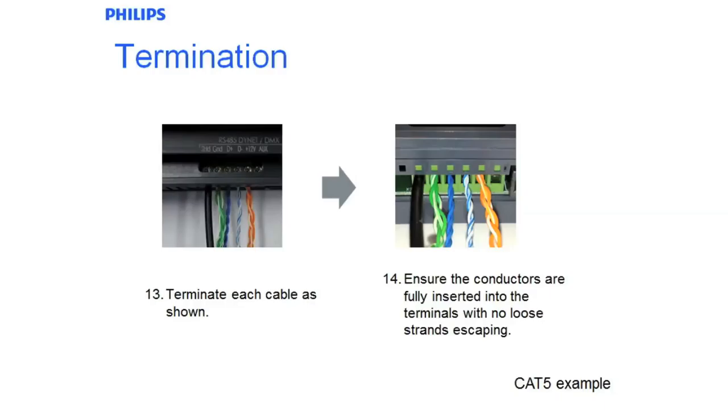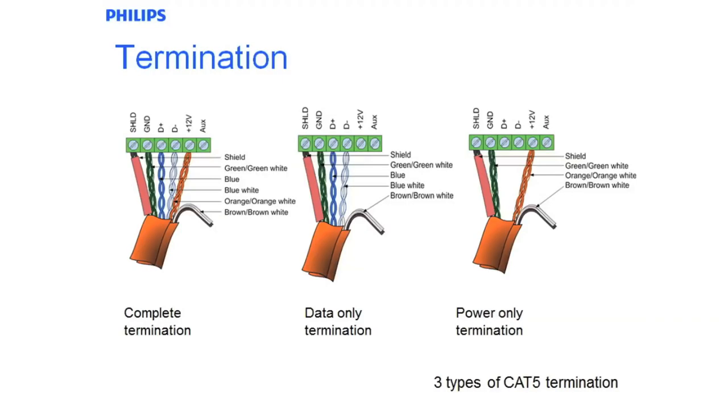The auxiliary connection is generally not used in most applications. There are four typical terminations which can be done depending on the application. The complete termination includes drain wire into the shield, green pairs into the ground, the blue of the blue pair into D-plus, the white of the blue pair into D-minus, the orange pair into plus-12, and the auxiliary terminal not used. With the Cat5, the spare pair is always not used. Just pull it back on itself and you can use it in future if required.